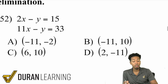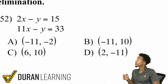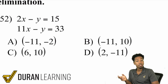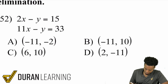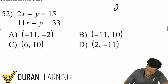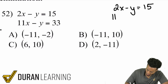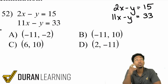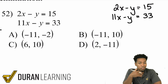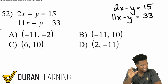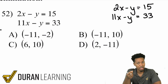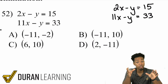Let me show you this technique again with number 52. We have 2x minus y equals 15, and 11x minus y equals 33. Notice again, if you were to add these together it wouldn't work — negative y plus negative y is negative 2y, it's not going to eliminate. So we have to subtract.